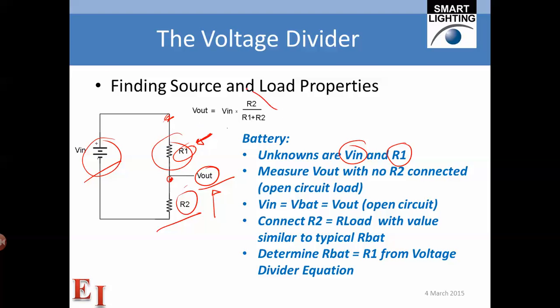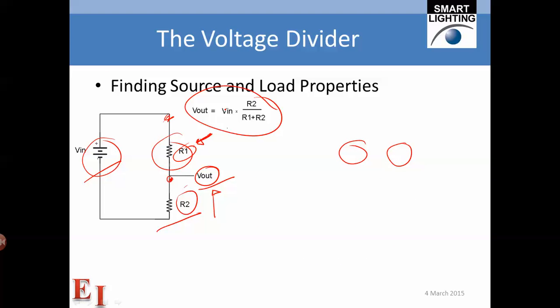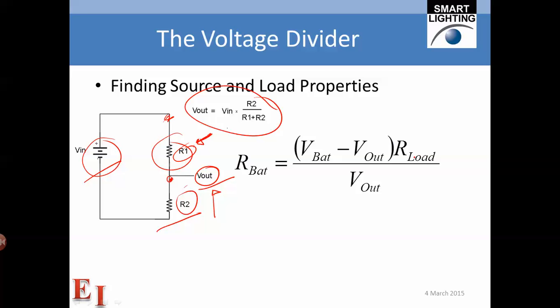we have only one unknown in the voltage divider equation, and we can figure out what the battery resistance is. Reworking that equation, the battery resistance equals (V_battery minus Vout) times R_load divided by Vout.